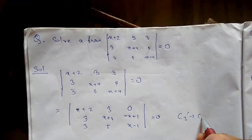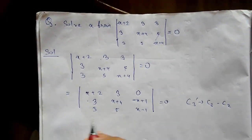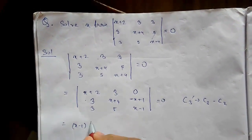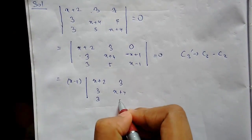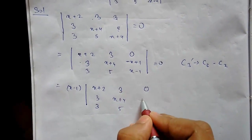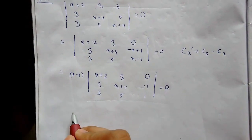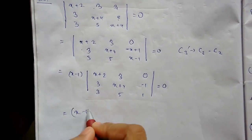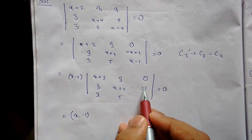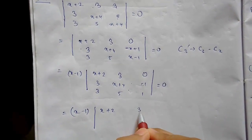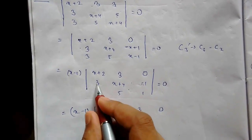We make changes in column 3: C3 dash = C3 minus C2. Column 3 becomes: (x+2−3)=x−1 from the first application, giving entries −1, x−1 type. Taking (x minus 1) common from column 3, the matrix becomes: x+2, 3, 3 / 3, x+4, 5 / 0, −1, 1 scaled by (x−1) = 0. Then to simplify, we add row 3 to row 2.